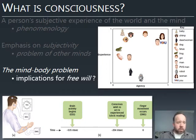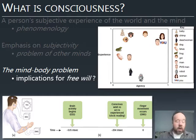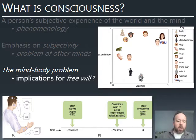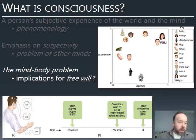Some definitions of free will do not depend on unpredictability, so this would not disrupt that account. But some do — some people say if you can predict what I'm going to do at any moment, do I really have free will? This is getting toward a philosophical debate, but it's one that psychological data have some bearing on.